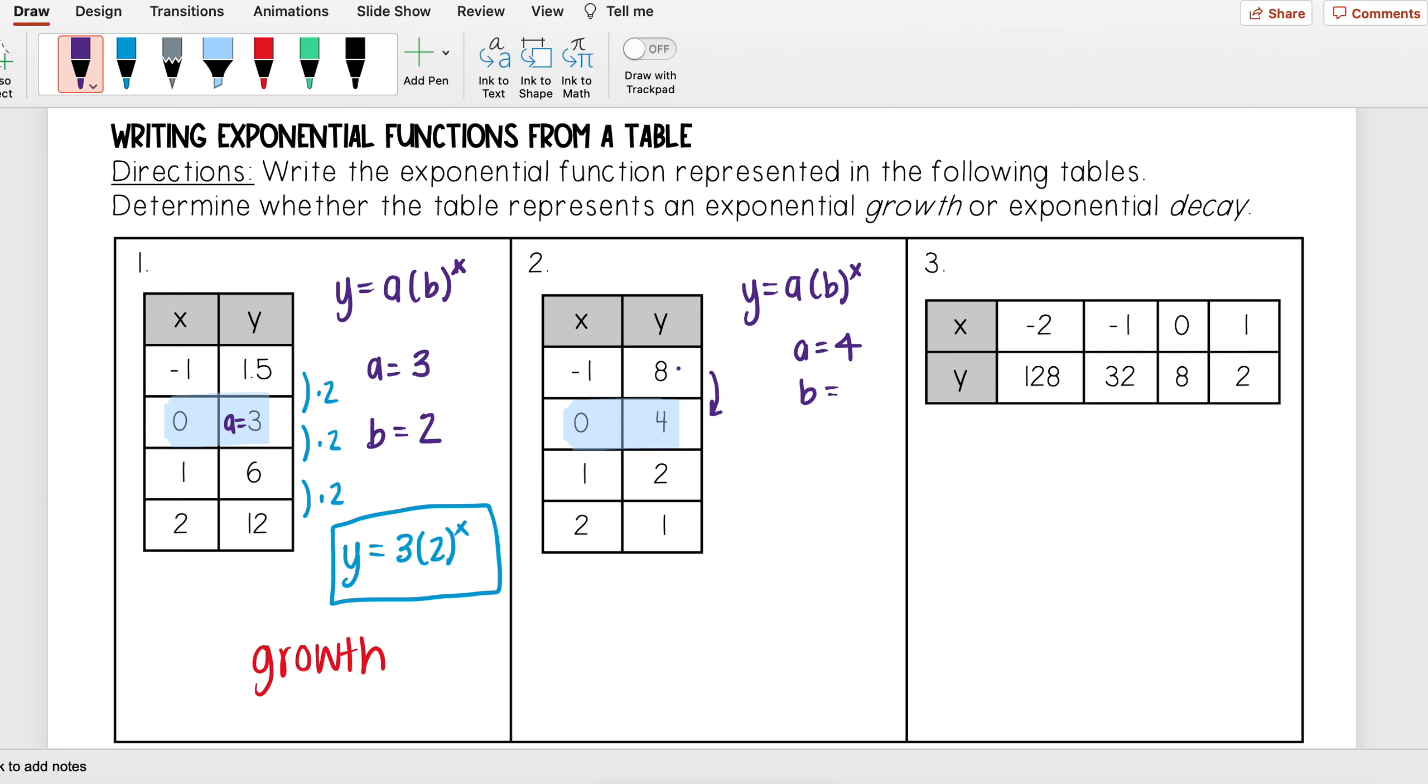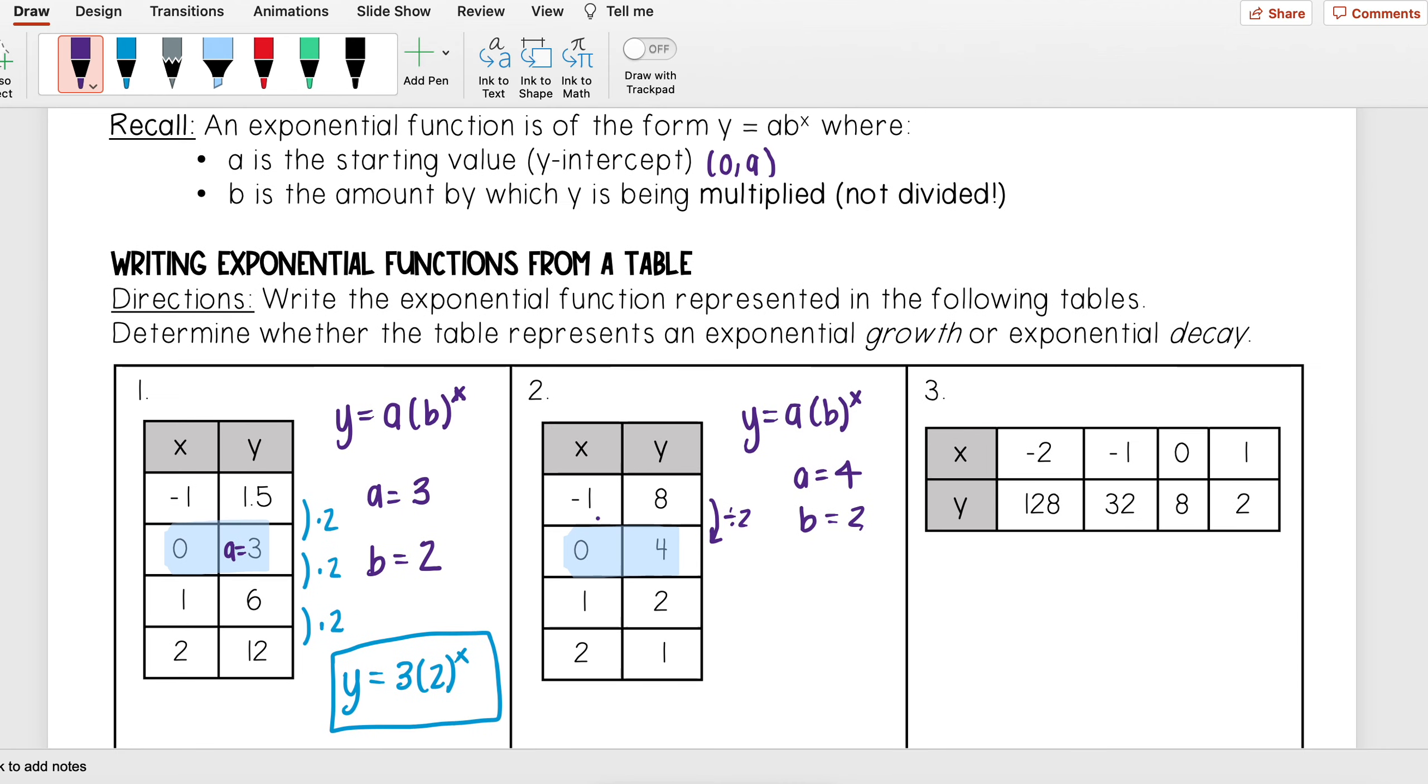I want to see what I need to multiply to get from eight to four. Some of you may be able to tell me, 'Well, to get from eight to four I need to divide by two,' so you'll put divide by two and say your b is equal to two. However, that is not correct. As I made a note of here, b is the amount by which y is being multiplied, not divided.